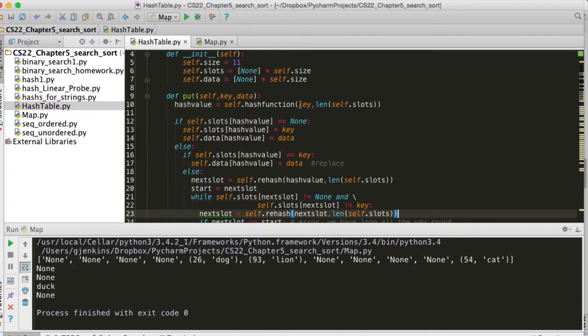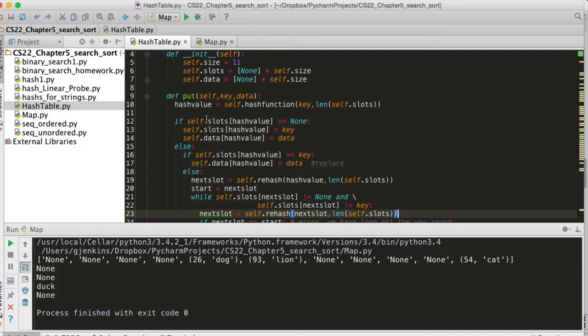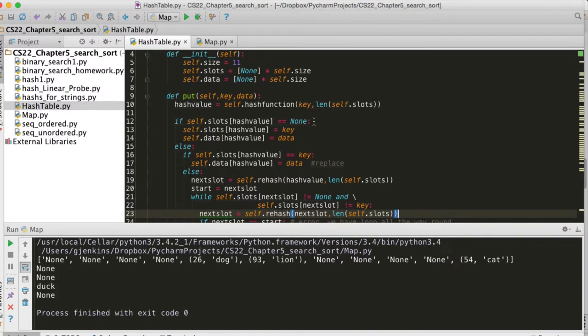When it goes to put in a new key, it's going to do all the work we've talked about for hash tables. It first does a hash function here, so it gets a value which is the slot number. It checks, is the slot number already have, is the slot number empty? If it is, it's going to store the key into the slots and the data in the corresponding same hash value slot in the data list.